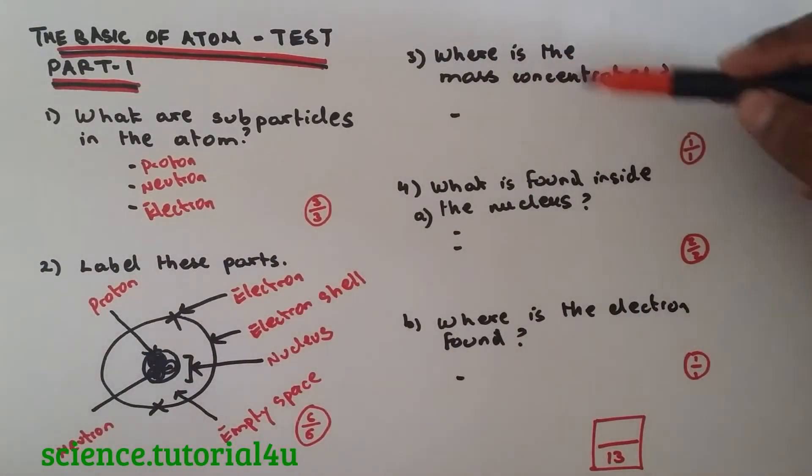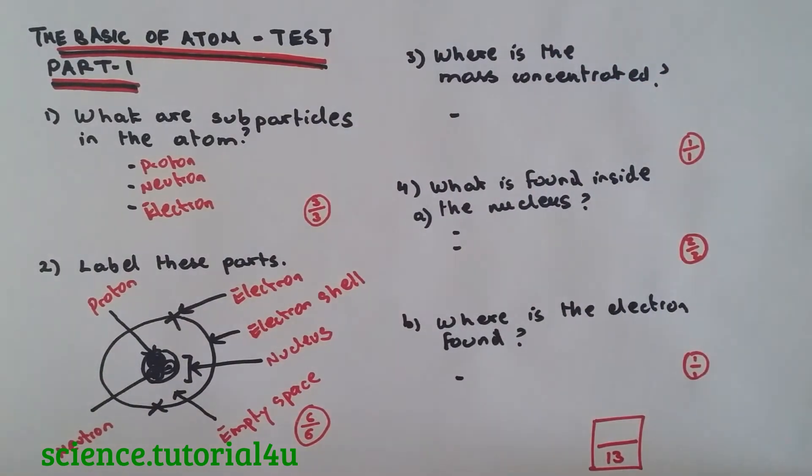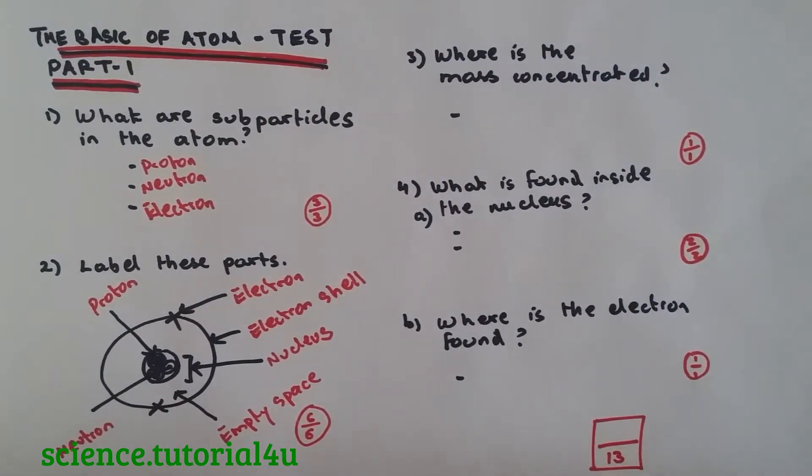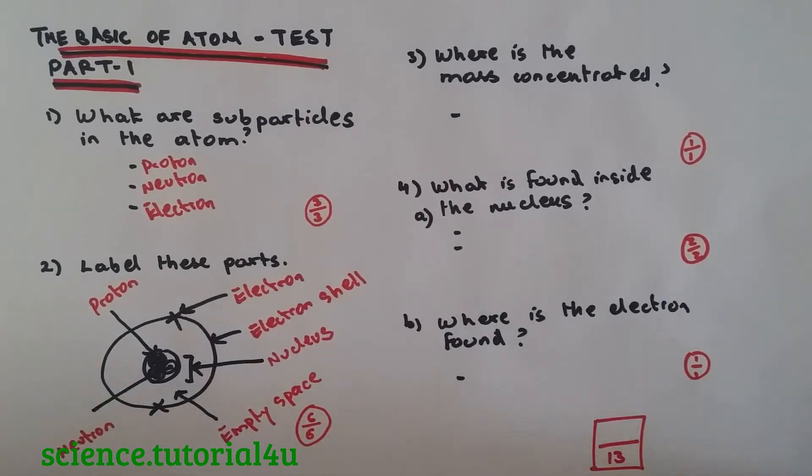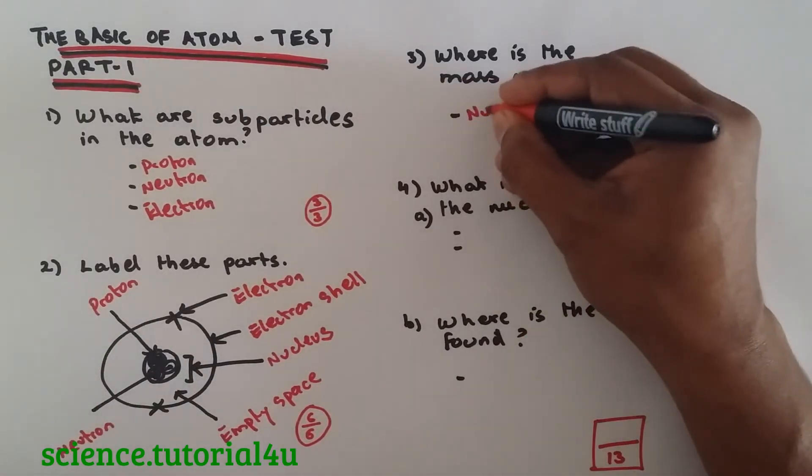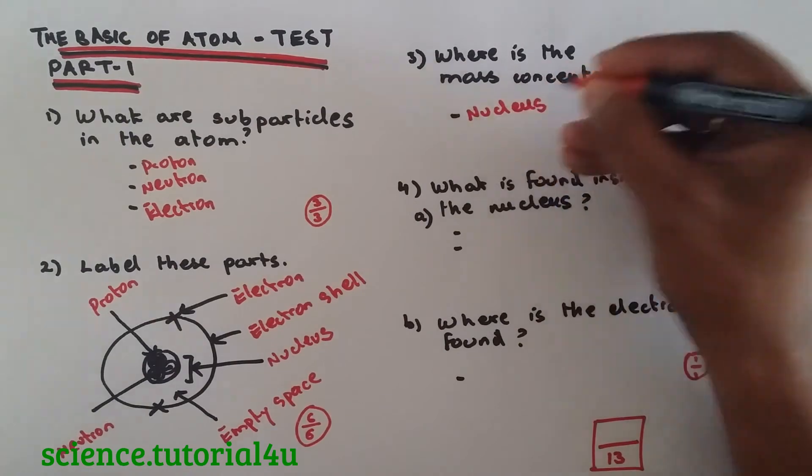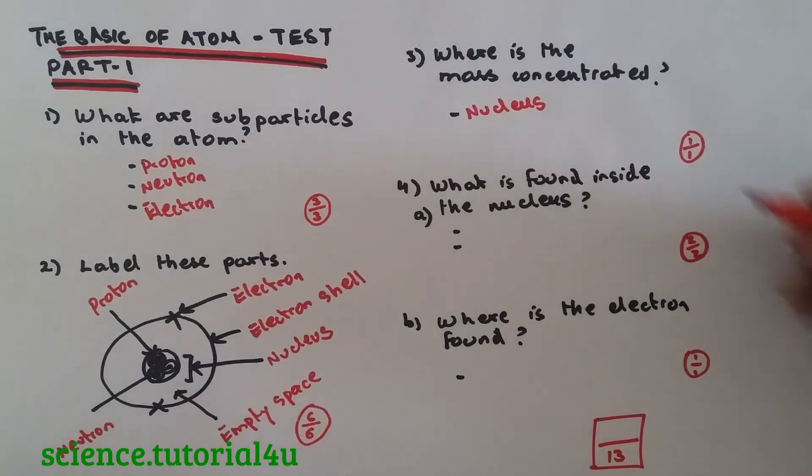Now, the third question, where is the mass concentrated? Now, only the Proton and Neutron has a mass, so the mass is concentrated in the Nucleus. If you said Proton and Neutron is still right. Okay, so one out of one.